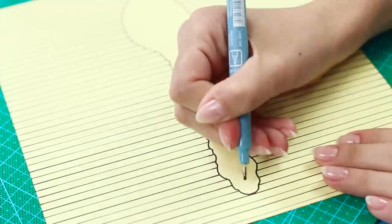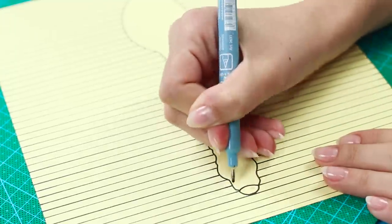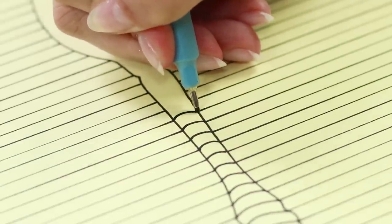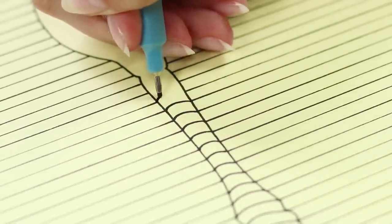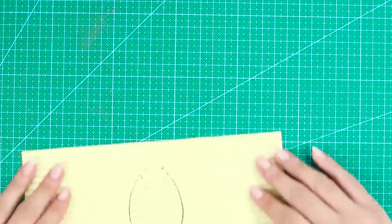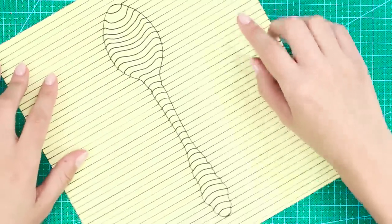We decorate the spoon with such curved lines, connecting the edges of the flat strips. The lines on the handle of the spoon are bent in one direction and, on the very bowl, in the opposite direction.